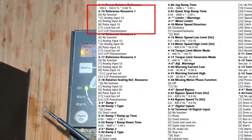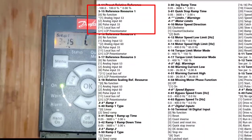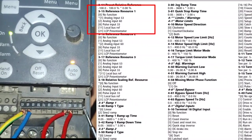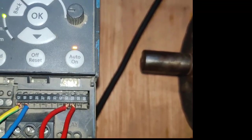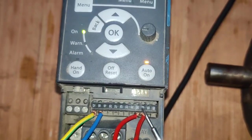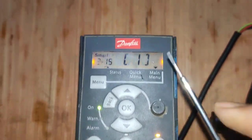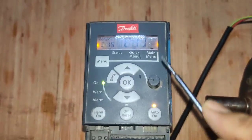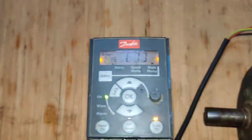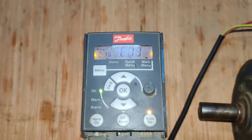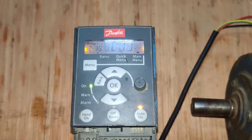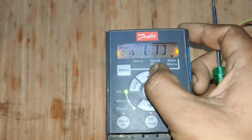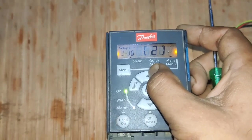Parameter 3-15 is reference source selection. If you set 1, your analog input uses terminal 53. If you set 2, terminal 60 is used as the analog input. For potentiometer speed control, set 21. If you want to increase or decrease your motor speed via the drive keypad, set 11.